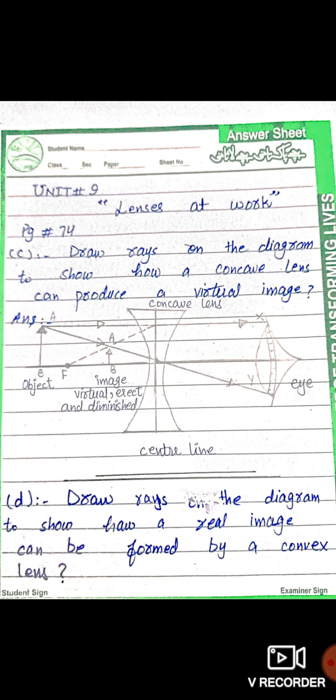Next question: draw rays on the diagram to show how a concave lens can produce a virtual image. You have to draw and label the diagram of a concave lens. Next: draw rays on the diagram to show how a real image can be formed by a concave lens. You have to draw the diagram of the concave lens and label the diagram as well.